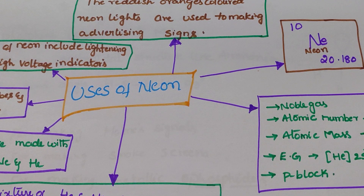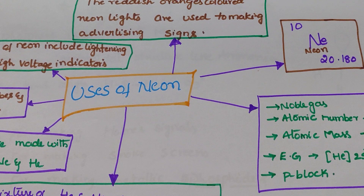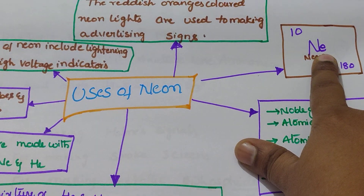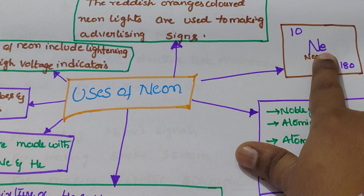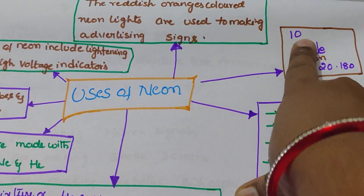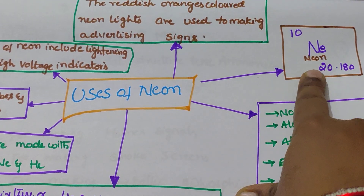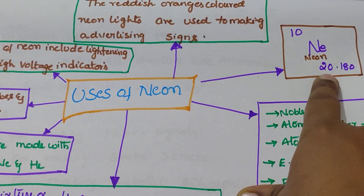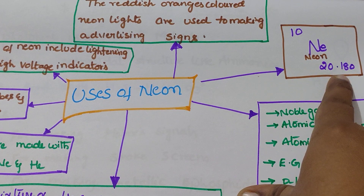What is neon? Neon is an element. The symbol of neon is Ne. The atomic number of neon is 10. The mass of neon is 20.180.